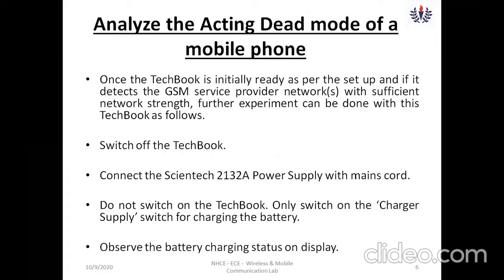The second mode of operation is the dead mode. We set up the tech book, it detects signals and has sufficient network strength, then we switch off the tech book using the button in the top left corner with a long press. We connect the kit to the power supply but do not switch on the tech book. The charger should be enabled using a toggle switch, and then we can observe the battery charging status displayed on the LCD screen.